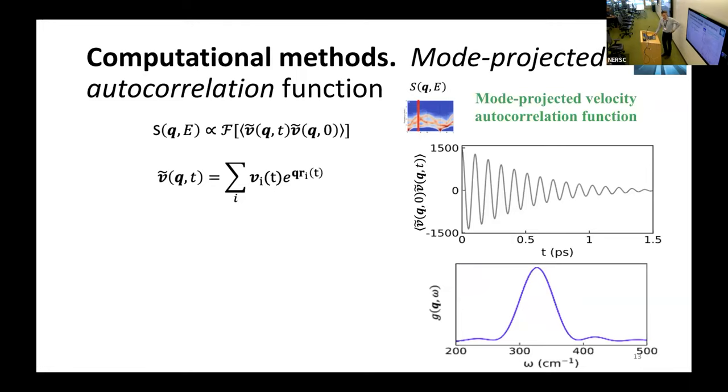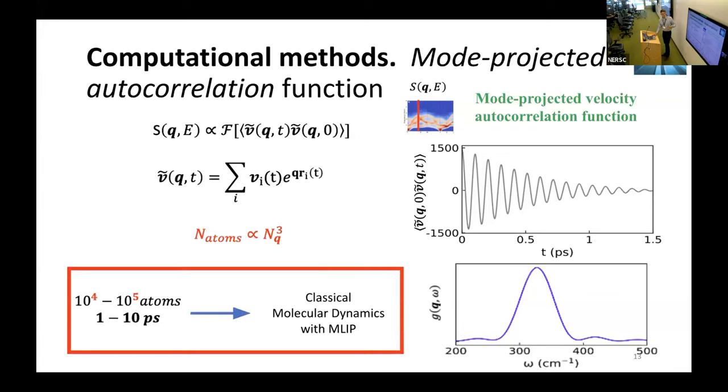For that we need to compute this mode-projected velocity autocorrelation function, which is basically transformed from real space to reciprocal space. Because we have to do this 3D Fourier transform, the number of atoms in the system we need is the number of q points we want to resolve cubed. This results in needing to perform large scale molecular dynamic simulations, 10^5 atoms usually, and 10 picoseconds.